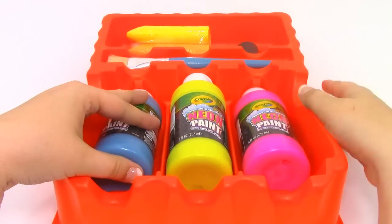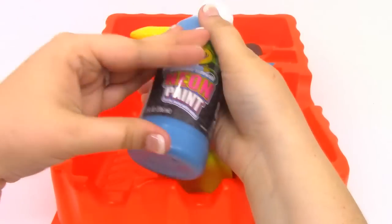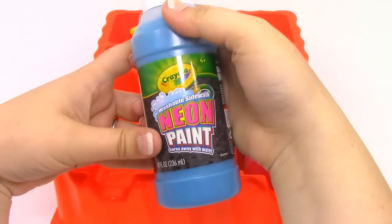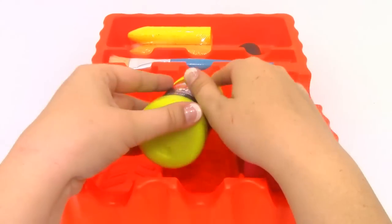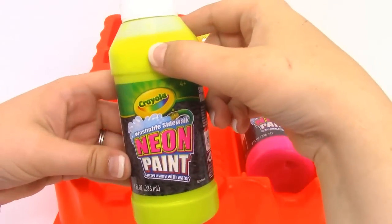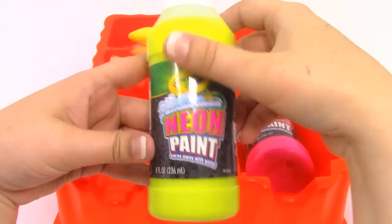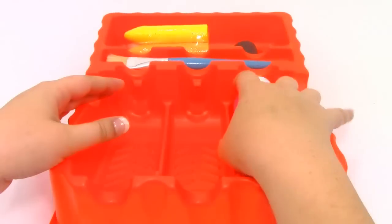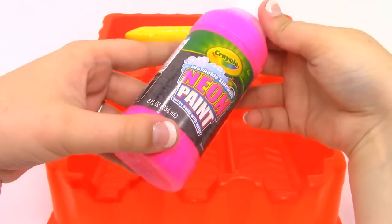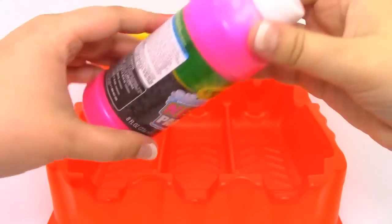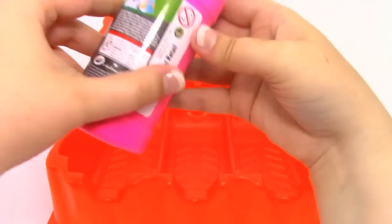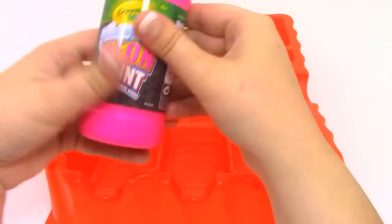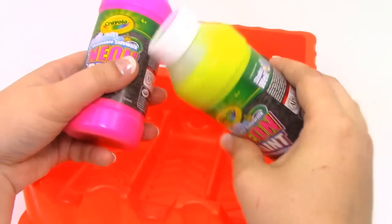Alright, so let's take a look at the things we got in this set. We got our blue paint. We have some yellow paint. And we have some pink paint. Which is kind of weird, because on the box, it definitely showed red, but this is more pink, and the yellow actually kind of looks green.